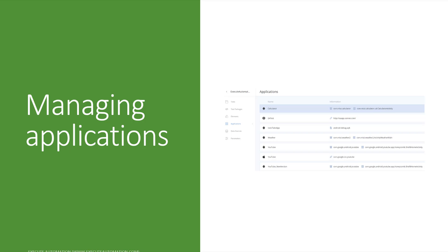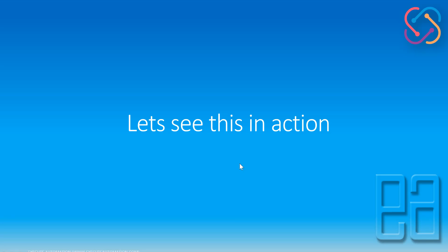Managing applications is also one of the most important tasks. While testing many different applications, it's important to maintain all of them and know what's being tested. You can remove applications from your recorded applications — for example, the Android debug APK file we uploaded for the Ionic Tabs app can be deleted so it's not stored in your Test Project account.